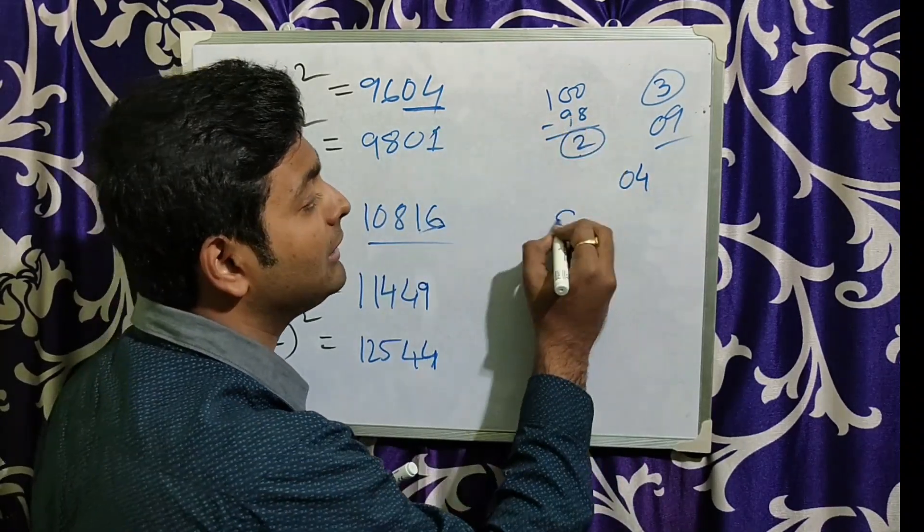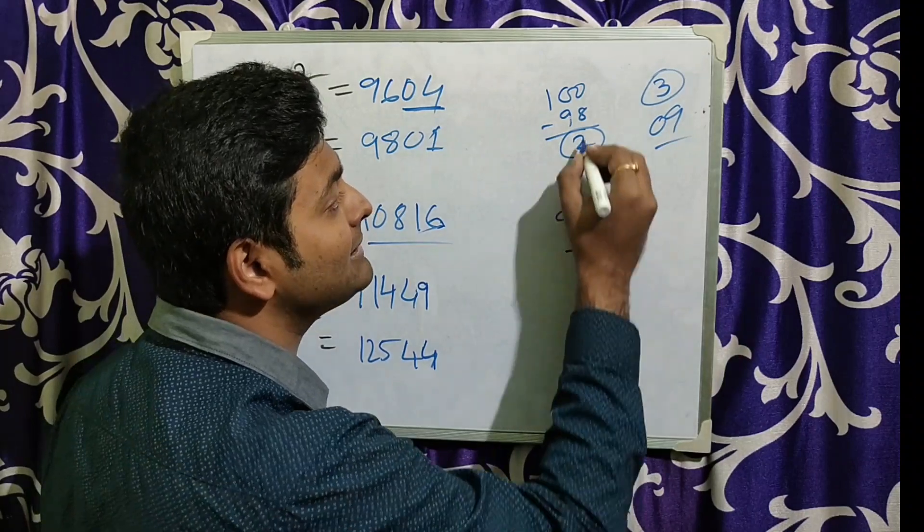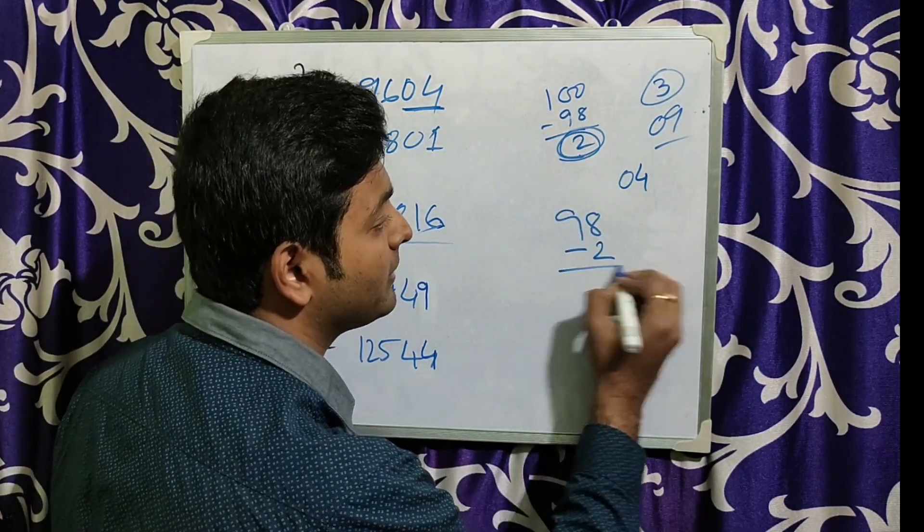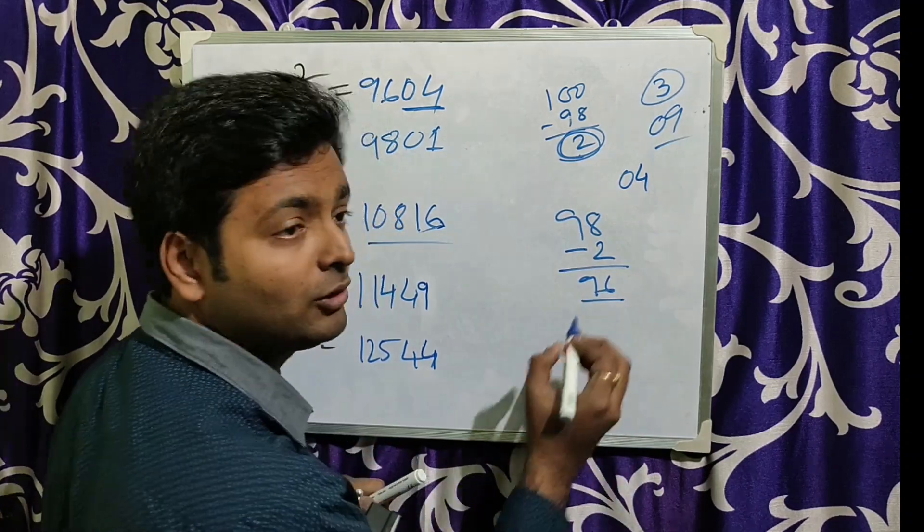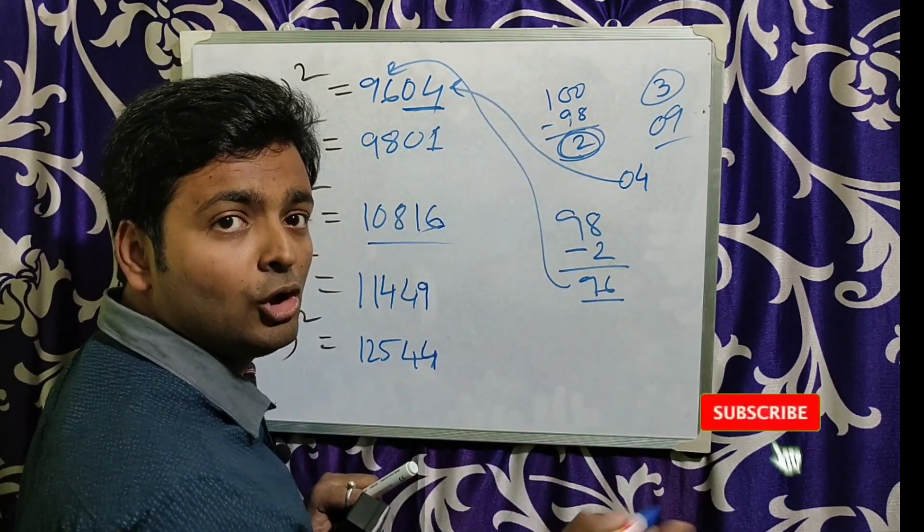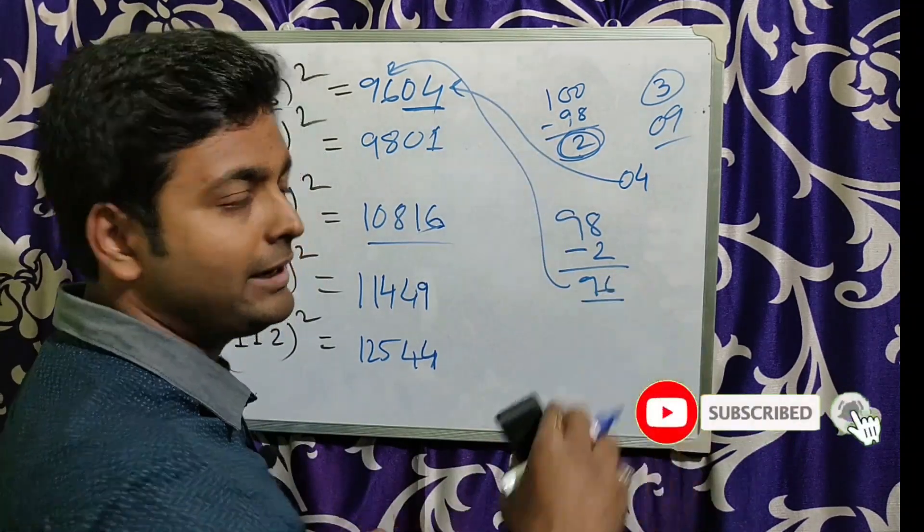Now, the number is what? 98. 98 minus that number. I told you this is very important number, minus 2. That gives 96. So this 96 will be there and that 4 is there. One more I am going to do.